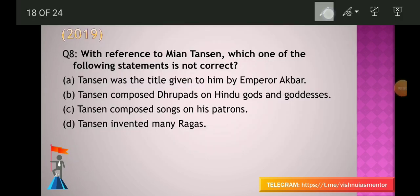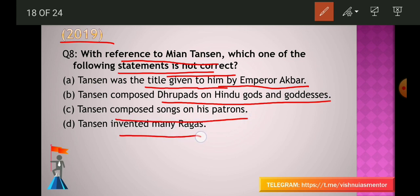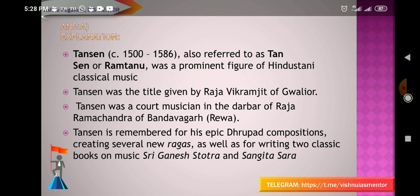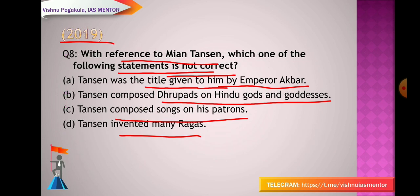From the 2019 question paper: With reference to Mian Tansen, which one of the following statements is NOT correct? (A) Tansen was a title given to him by Emperor Akbar, (B) Tansen composed Drupadas on Hindu gods and goddesses, (C) Tansen composed songs on his patrons, (D) Tansen invented many ragas. The answer is A — the title Tansen was not given by Emperor Akbar; this statement is wrong.